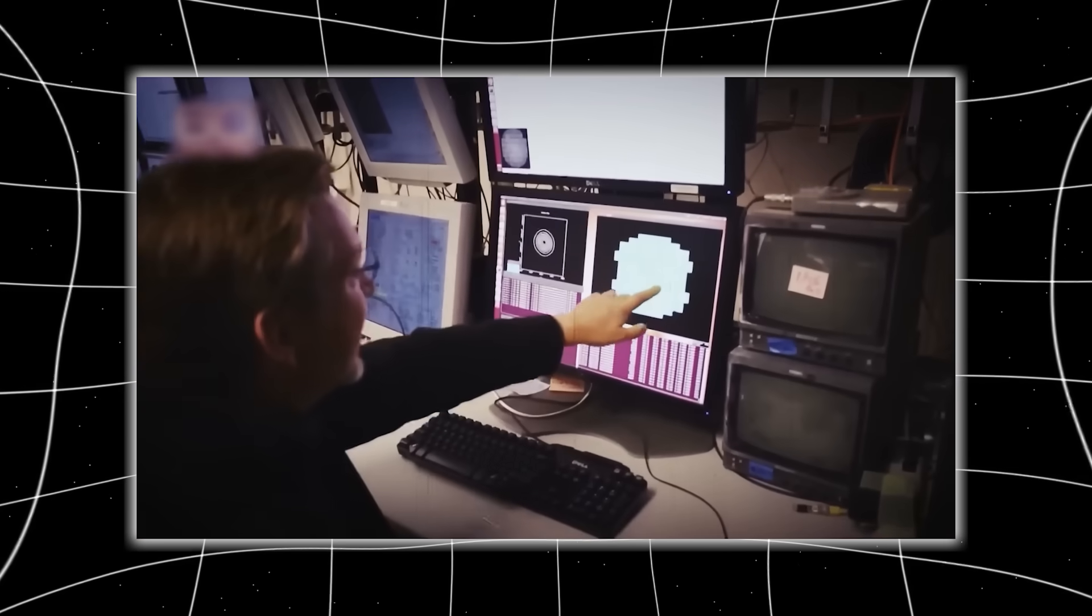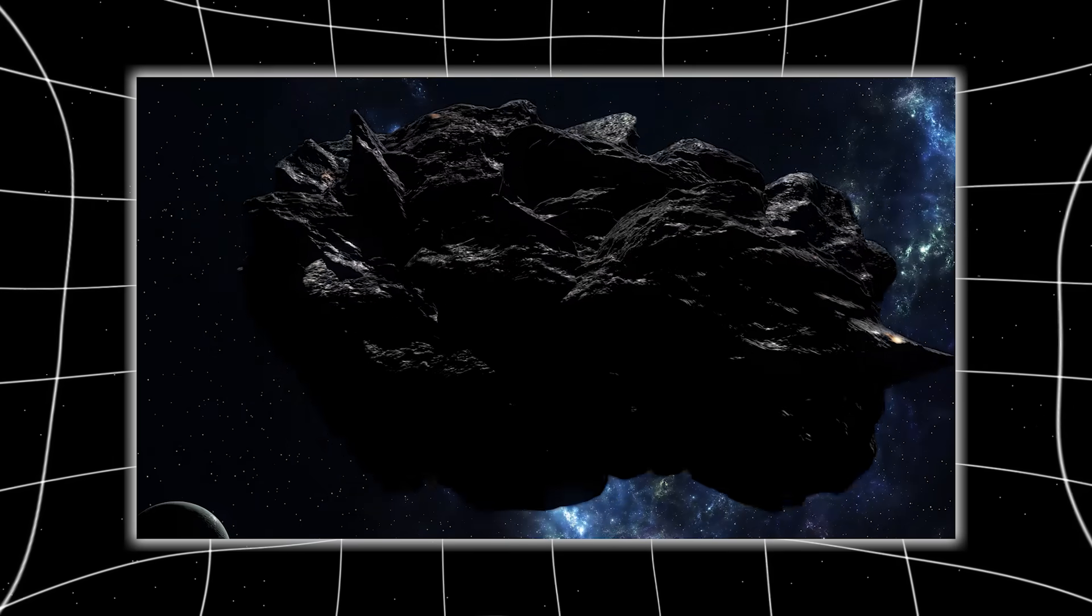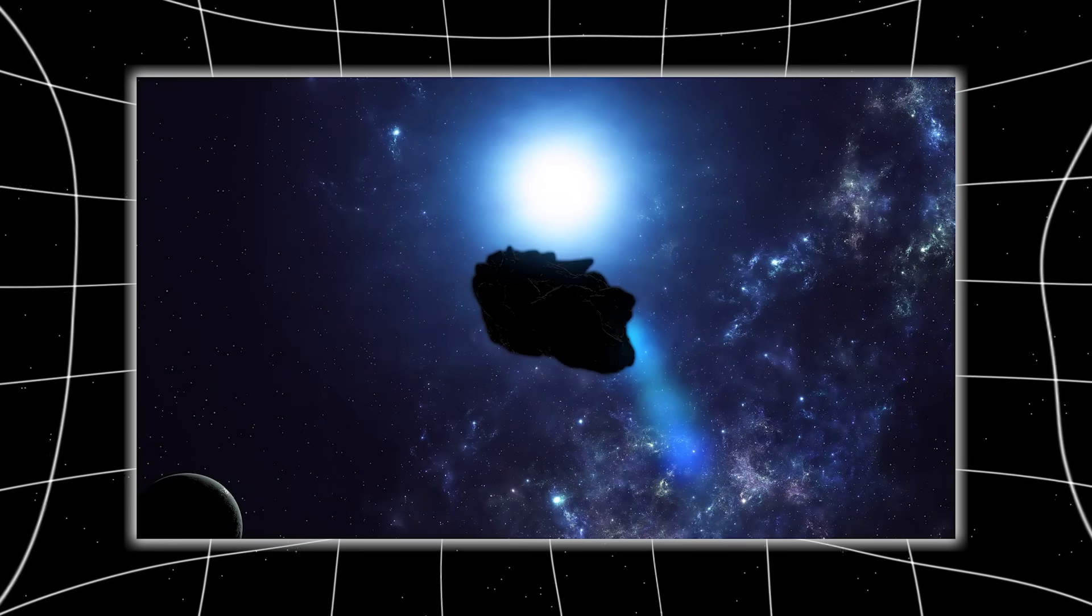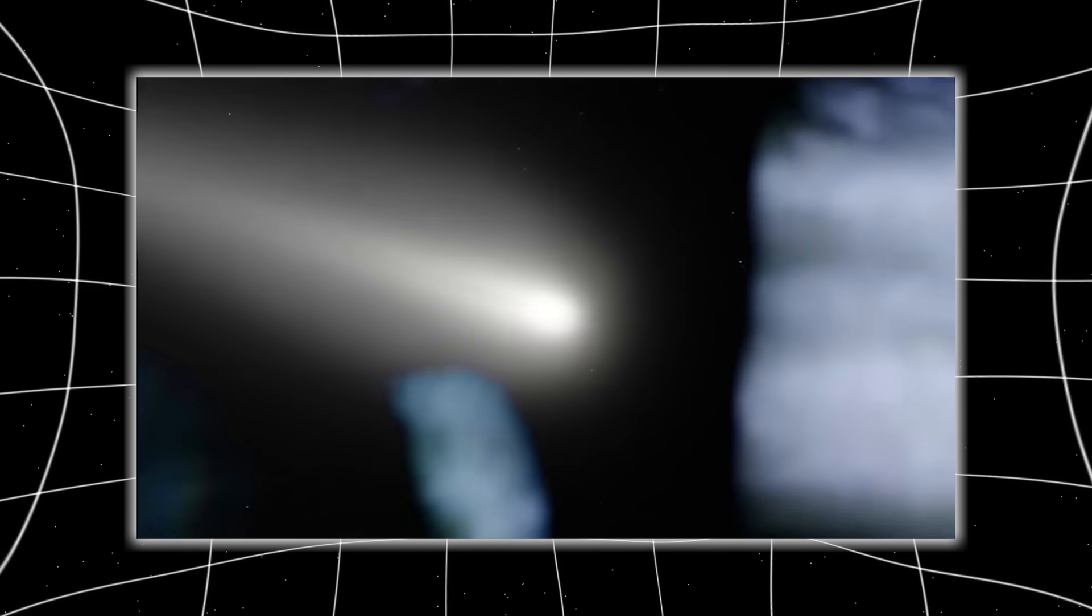Because if 3i Atlas is natural then we're witnessing a new category of interstellar object. One shaped over billions of years. Hardened by cosmic rays. Sculpted into a form no comet from our solar system has ever taken.